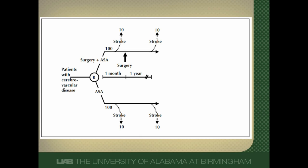Let's see why we can't do that. Here's a study of patients with cerebrovascular disease. The question was: does surgery and aspirin prevent more strokes than aspirin alone? This is a randomized trial — 100 patients were randomized to the surgery-and-aspirin arm and 100 patients to the aspirin-alone arm. It takes about one month for patients to complete preoperative evaluation and get ready for surgery. During that one month before surgery, 10 patients had a stroke in the surgery arm. The full study lasted one year, and at the end of that year, 10 more patients in the surgery arm had a stroke, and 20 total patients in the aspirin arm had a stroke.